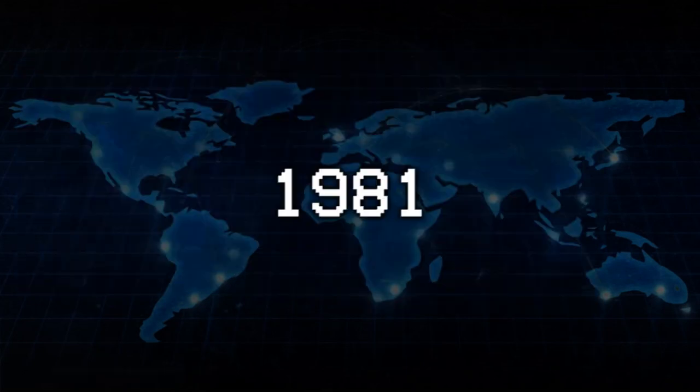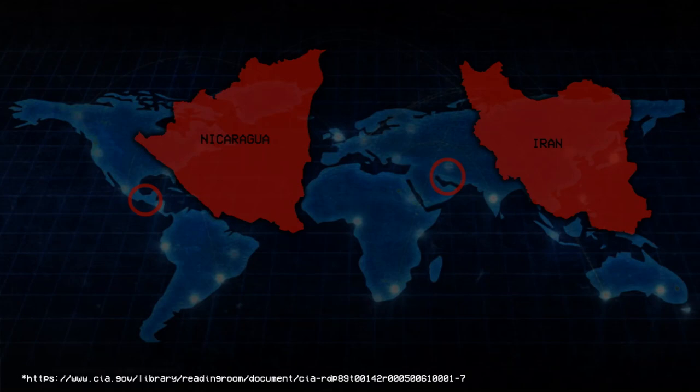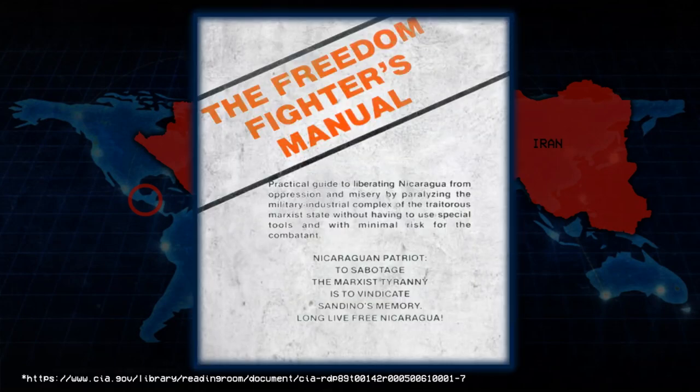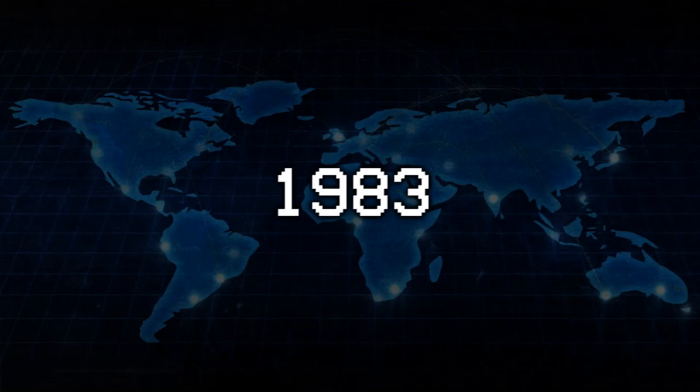1981. The Iran-Contra scandal begins. The CIA starts selling arms to the Khomeini government of Iran — subject of an arms embargo — using the profits to arm the Contras fighting the Sandinista government in Nicaragua. President Reagan vows the Sandinistas will be pressured until they say uncle. The CIA's Freedom Fighters Manual, dispersed to the Contras, includes instructions on economic sabotage, propaganda, extortion, bribery, blackmail, interrogation, torture, murder, and political assassination.